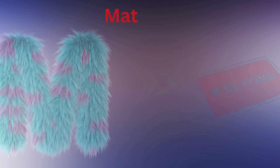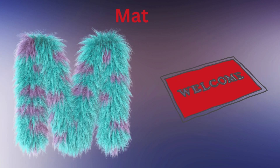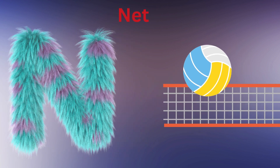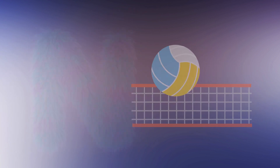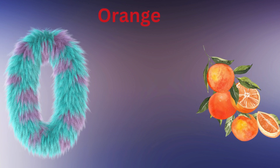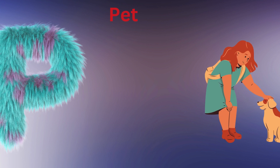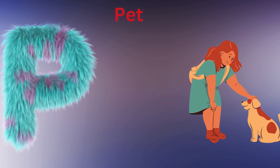M is for Monkey, M-M-Monkey. N is for Net, N-N-Net. O is for Octopus, O-O-Octopus. P is for Parrot, P-P-Parrot.